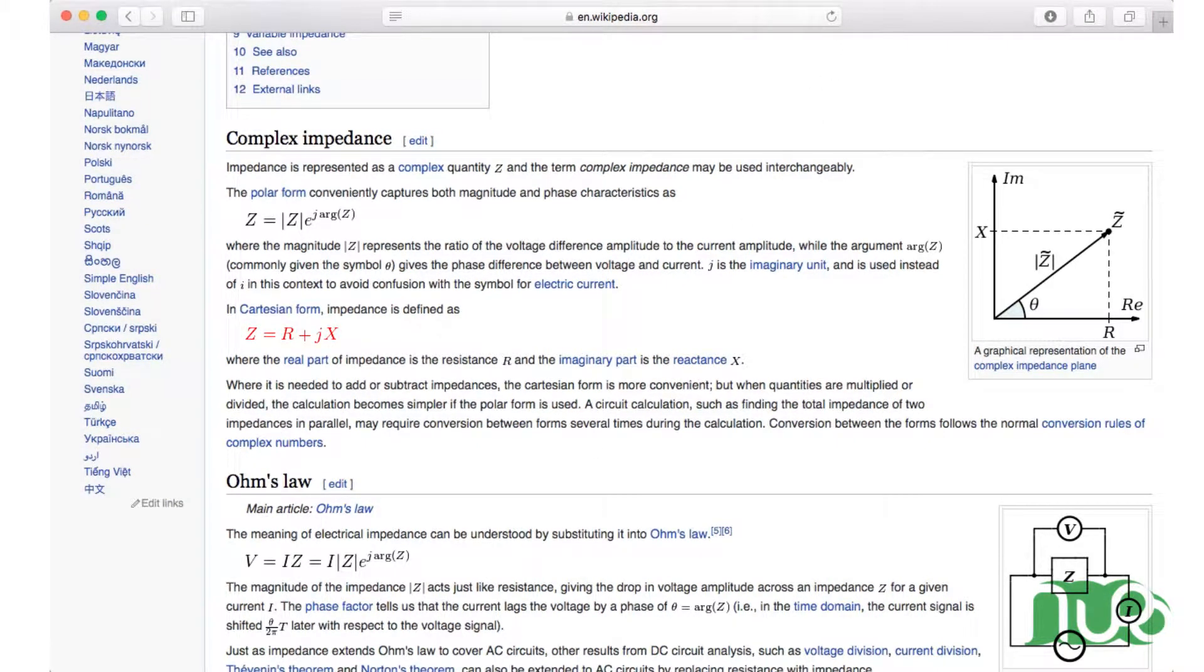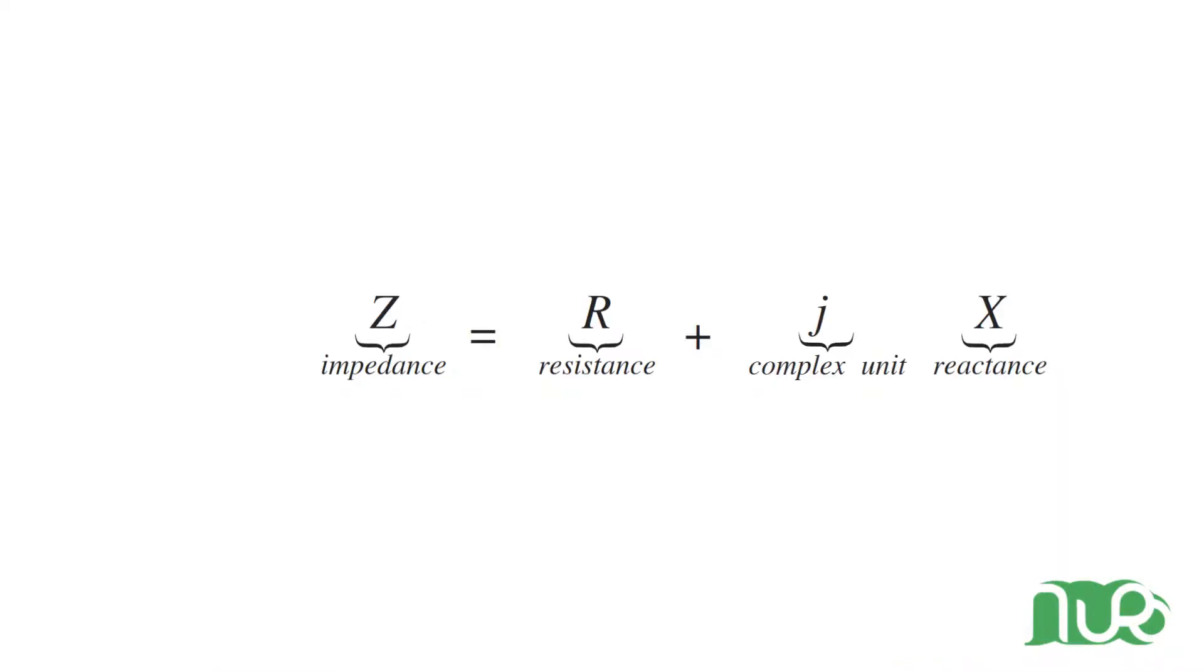Let's start with this formula from Wikipedia that defines the two parts that impedance consists of. However, at first we removed the complex unit because to understand the basic concept it really is not important to think in complex numbers. Much better! Now we are left with the basic resistance which we already know and the reactance part.